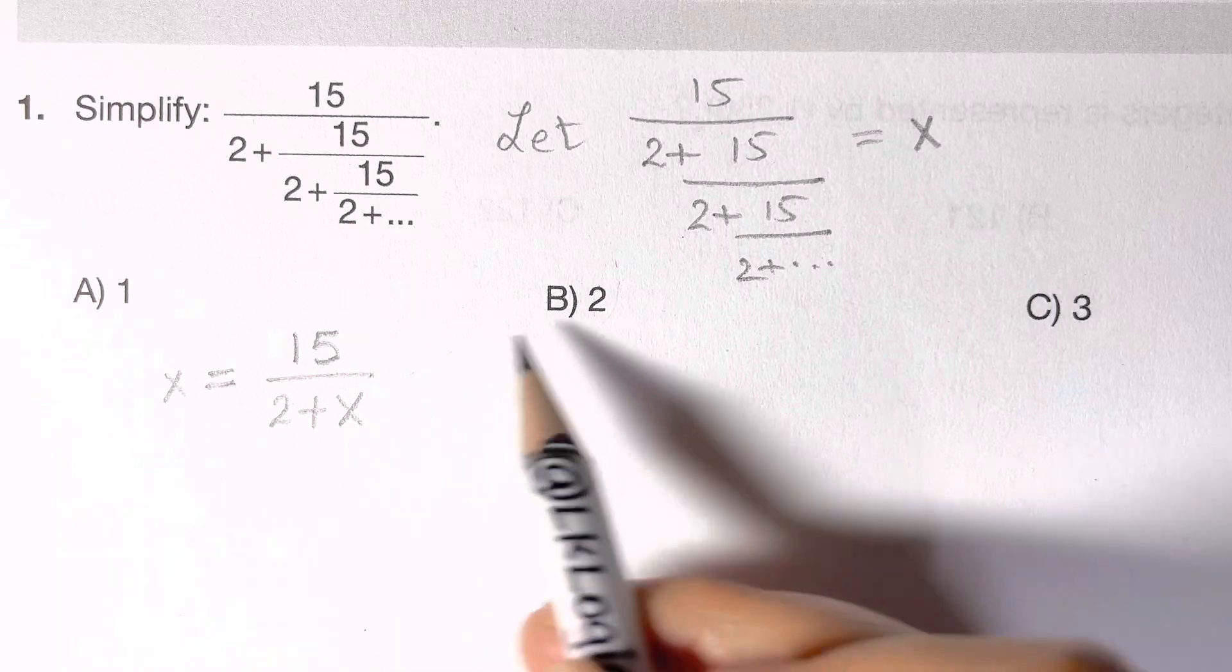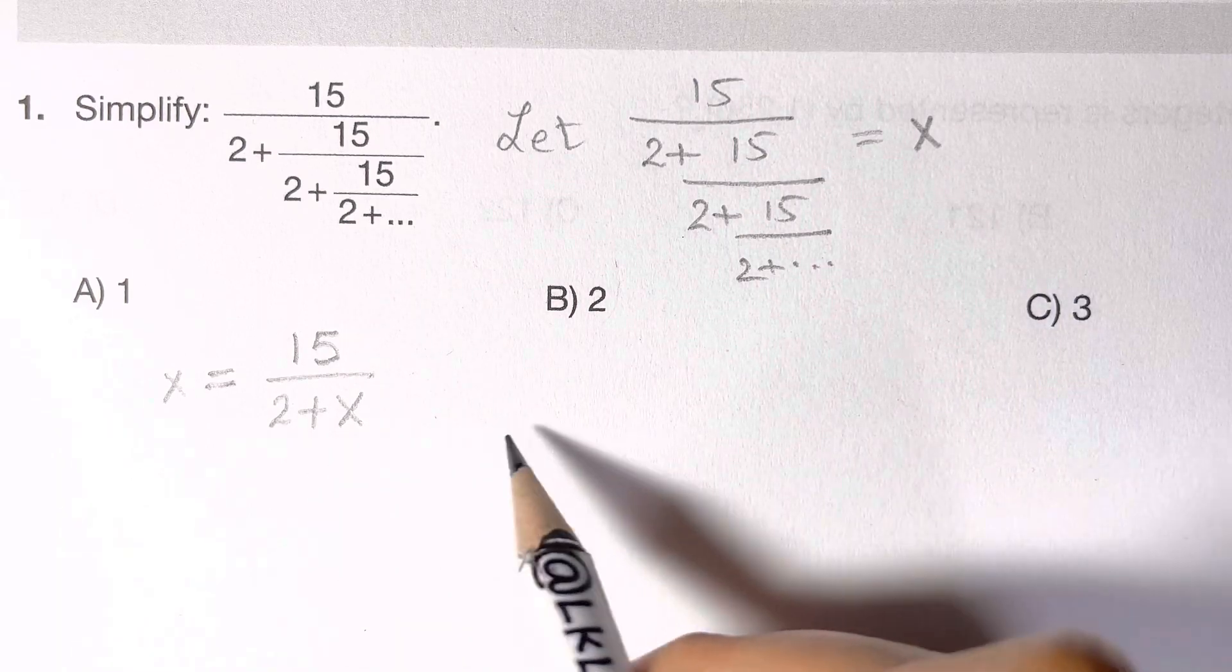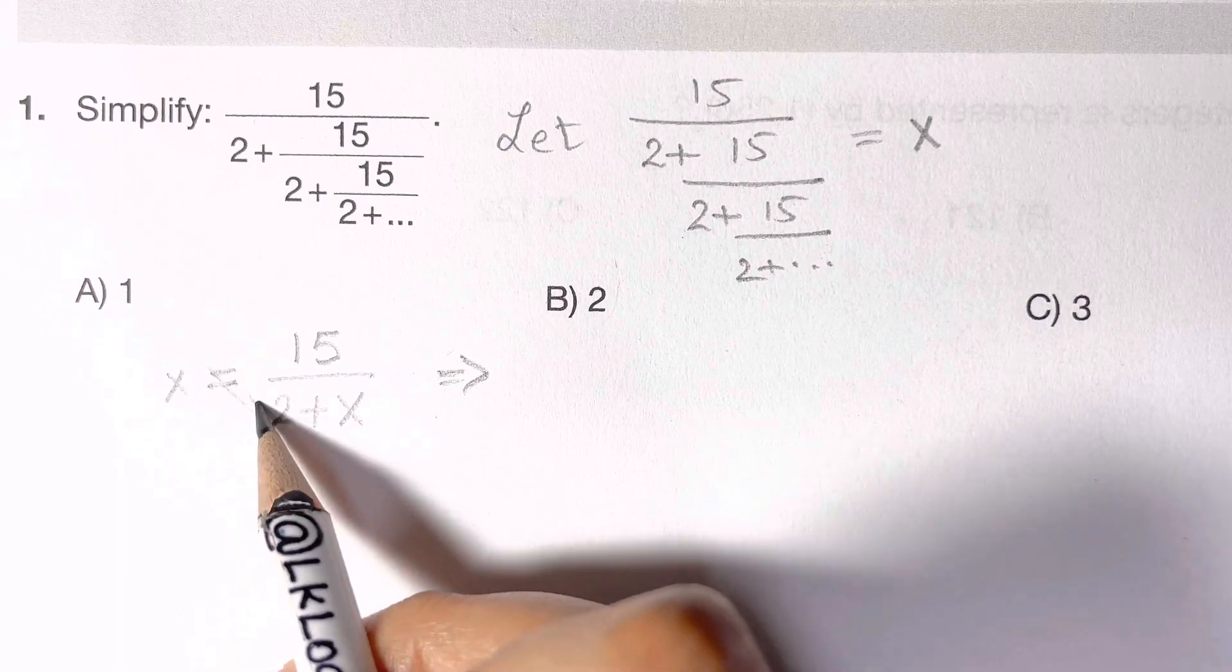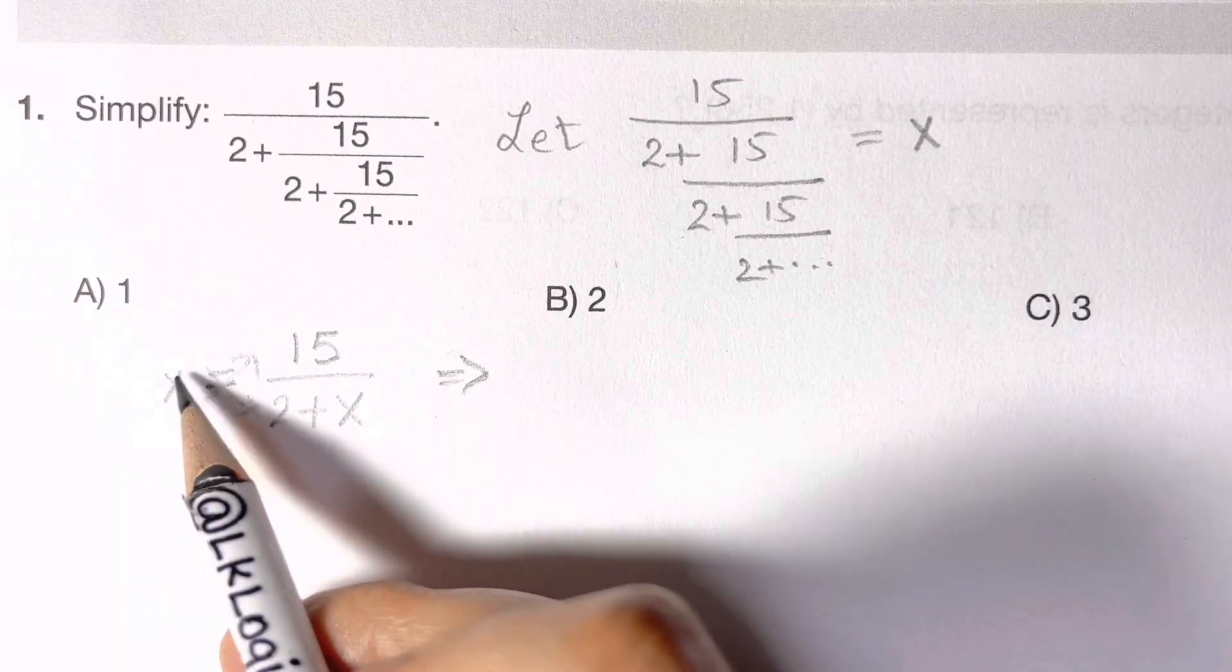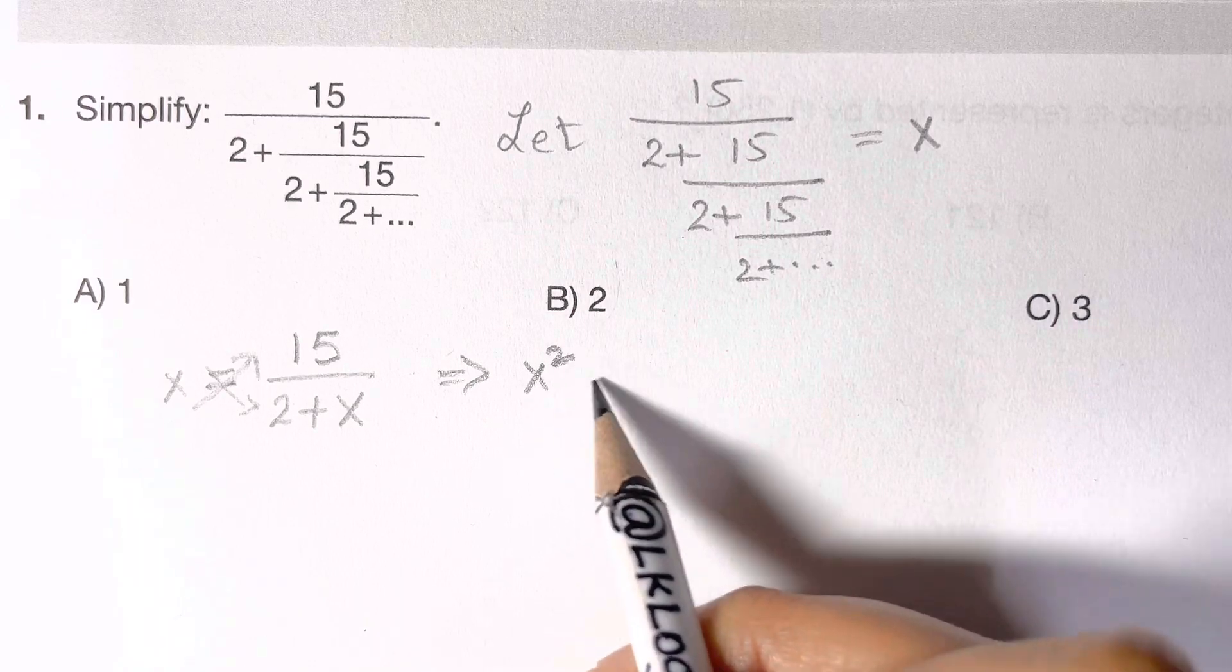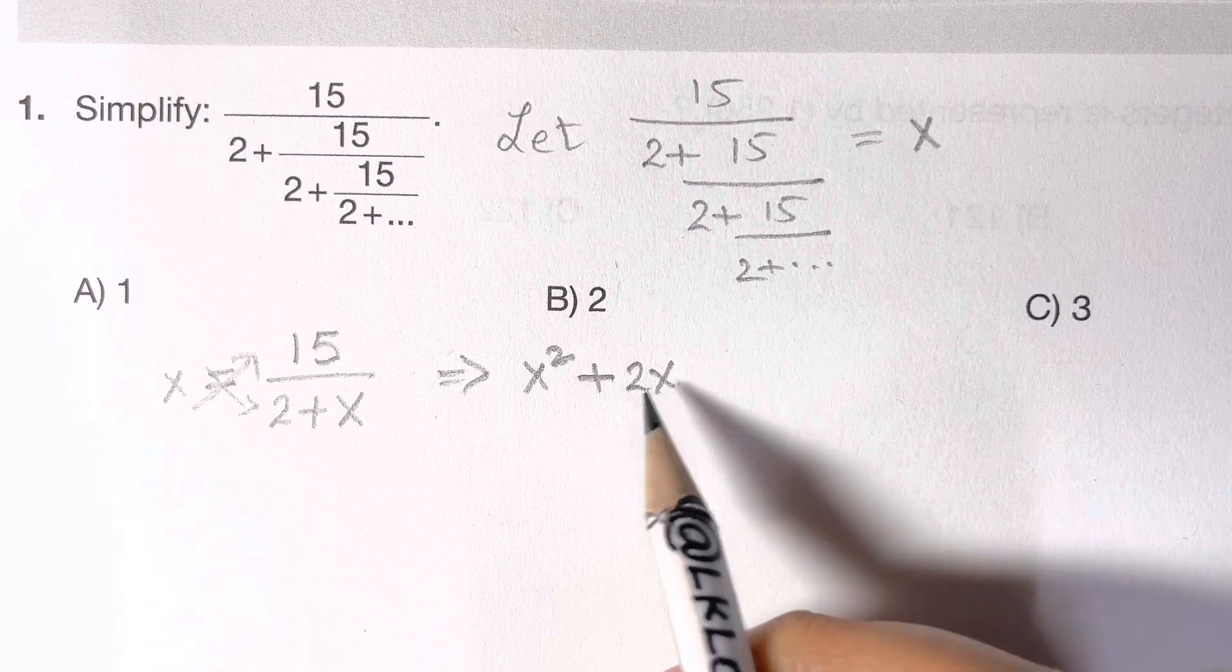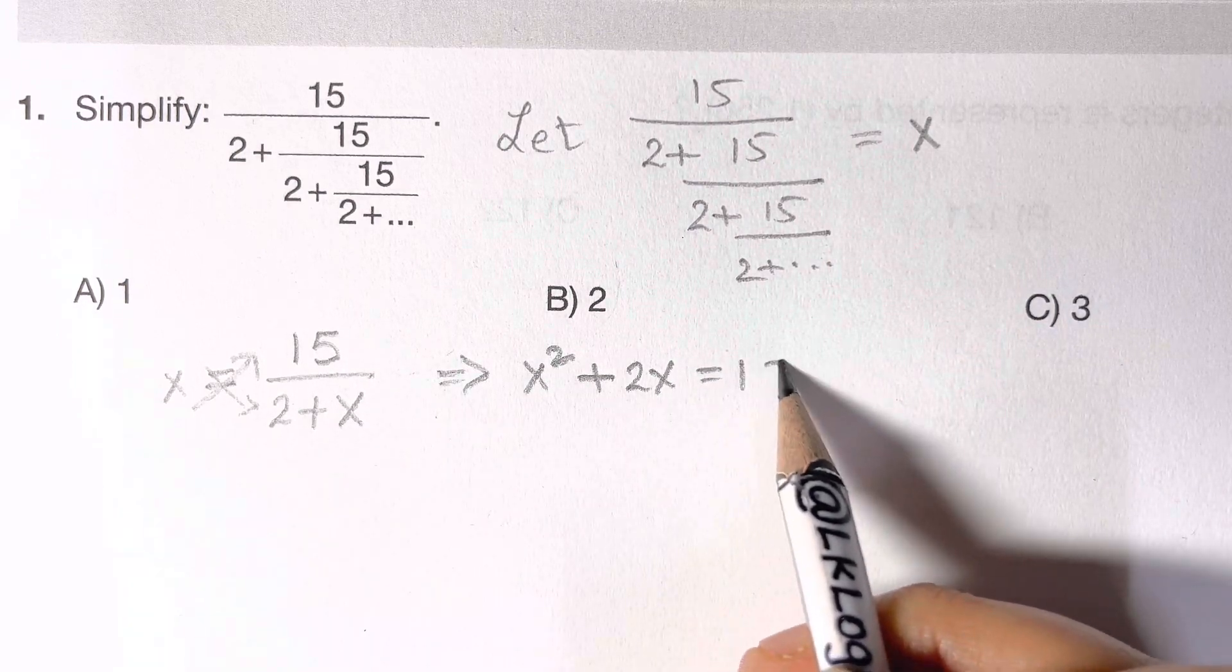Now it has become very easy for you to solve. What we can do is cross multiply. Just cross multiply things. So you're going to get x into x, x squared, plus 2 into x, 2x, is equal to 15.